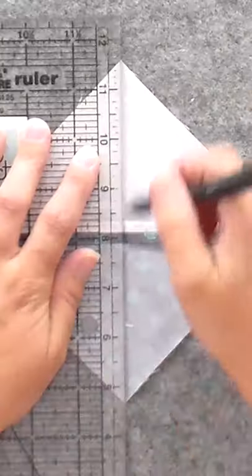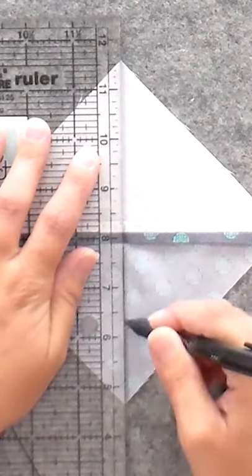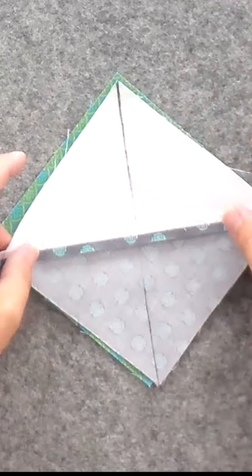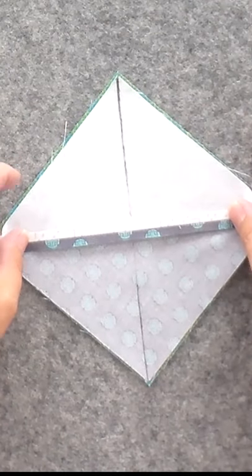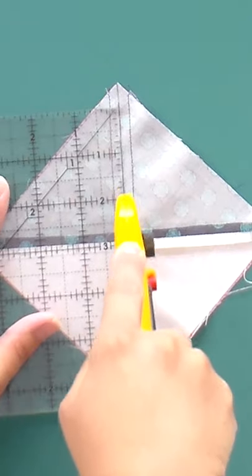Press the seams open but do not trim. Draw a line from corner to corner across the seam on the wrong side of the HSTs and place them right sides together with the squares that are one inch larger than the finished double pinwheel. Sew a scant quarter inch seam down both sides of the drawn lines and cut them apart.